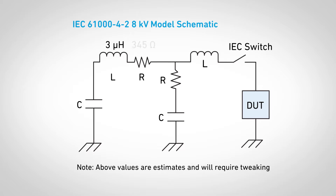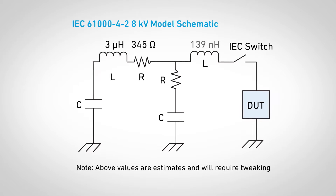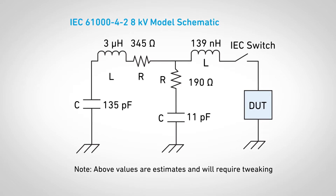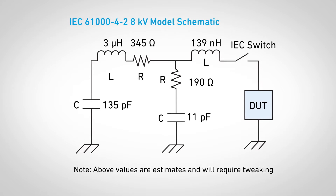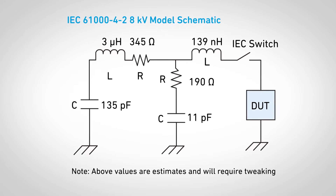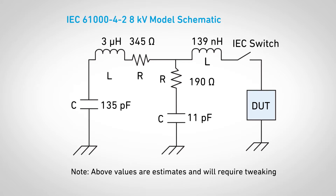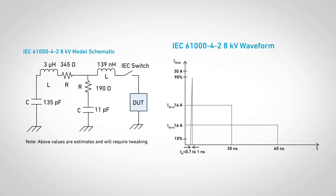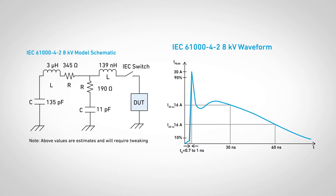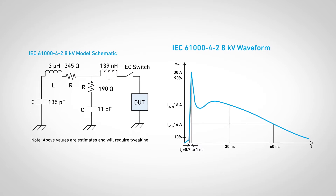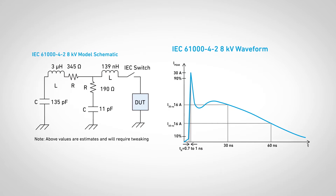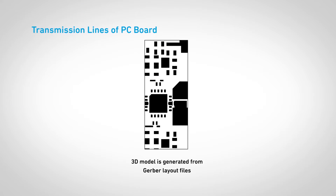Let's step through a SEED process example. First, model the IEC 8 kV stress. Use this circuit to model the IEC pulse. Note, the values shown may require tweaking in your analysis. The simulation waveform should conform to the IEC waveform from the standard. This model will be used to simulate your design robustness.